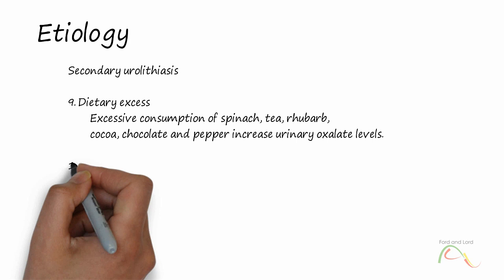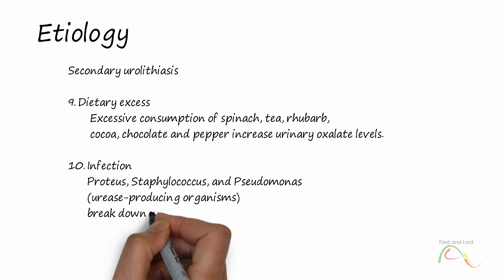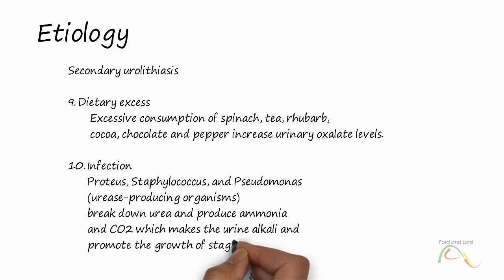Infection: Proteus, Staphylococcus, and Pseudomonas, urease-producing organisms, break down urea and produce ammonia and CO2, which makes the urine alkaline and promotes the growth of staghorn calculi.